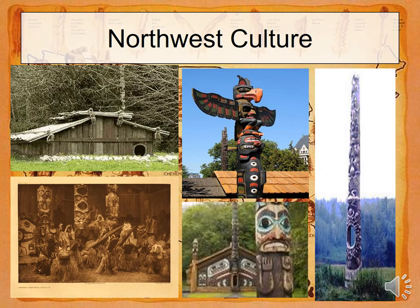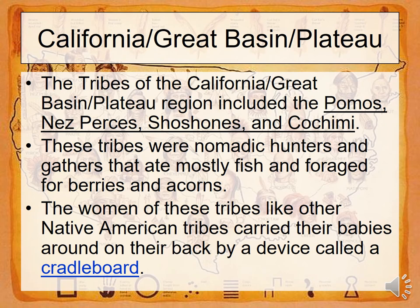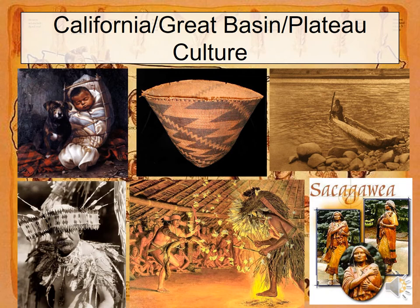One image associated with Native Americans is the teepee. The teepee was used much like a tent when going hunting — for moving around — but not the permanent thing they always lived in, and only certain tribes used teepees. The Northwest Coast tribes moving up into Canada had a very distinct society. They lived in wooden plank homes and built totems. Tribes of California, the Great Basin, and the Plateau — the Pomos, Nez Percés, Shoshones — were nomadic hunters who did mixed fishing and foraging. One distinct thing was the cradleboard, used to transport babies — a concept we've redesigned but still see similar things used today.